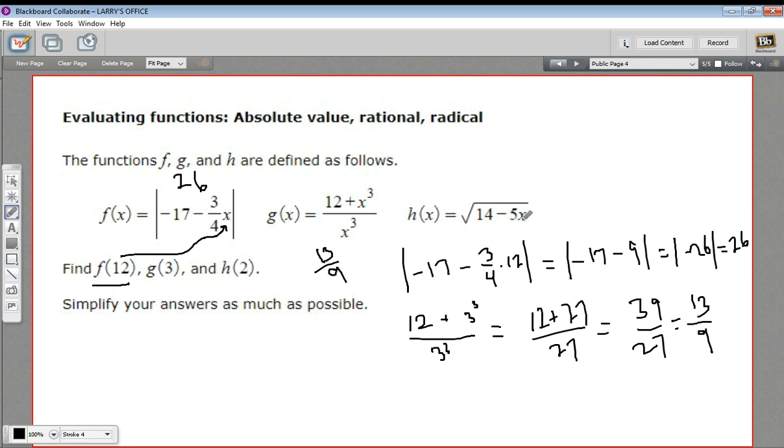All right, let's try the radical function next. h of 2. So in h of x, we put in 2 for x here. So this is going to be the square root of 14 minus 10, which is the square root of 4, which is 2. So this one is 2. h of 2.